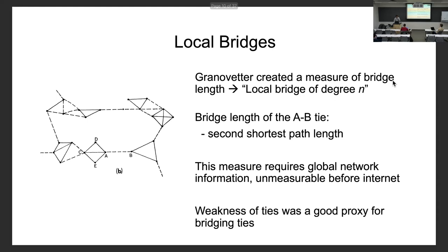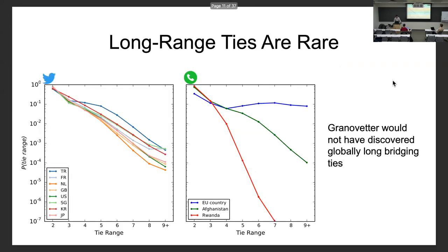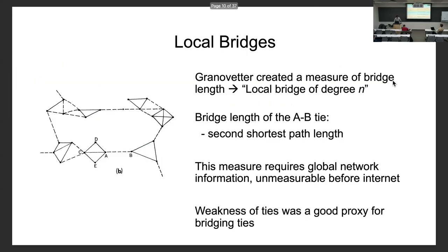Those local bridges of degree — I just call them 'high range,' same measurement, the second shortest path length from any two nodes that are connected — these long-range ties are surprisingly rare. If you take the Twitter communication networks from different countries on the left, and on the right phone call communication networks, the Y-axis is the probability of observing a high range of X. On the log scale it diminishes pretty quickly.